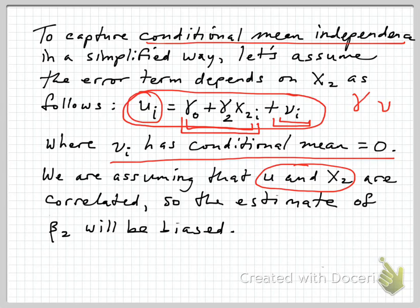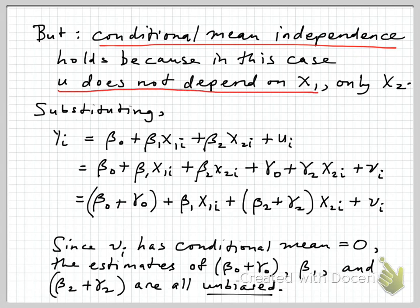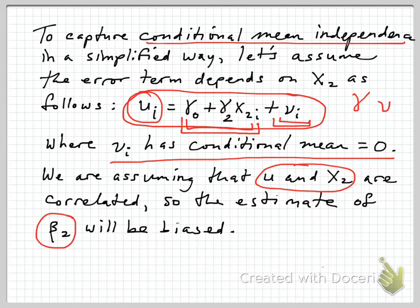We're assuming that u and x2 are correlated, and that means in the overall regression we're going to get a biased estimate of beta 2. We have the classic omitted variable bias problem — a correlation between the error term and x2, also frequently called endogeneity. But conditional mean independence with respect to variable x1, the variable of interest, does hold in this case, because if you notice, u does not depend on x1 — it only depends on x2 and the nu, which is uncorrelated with anything.